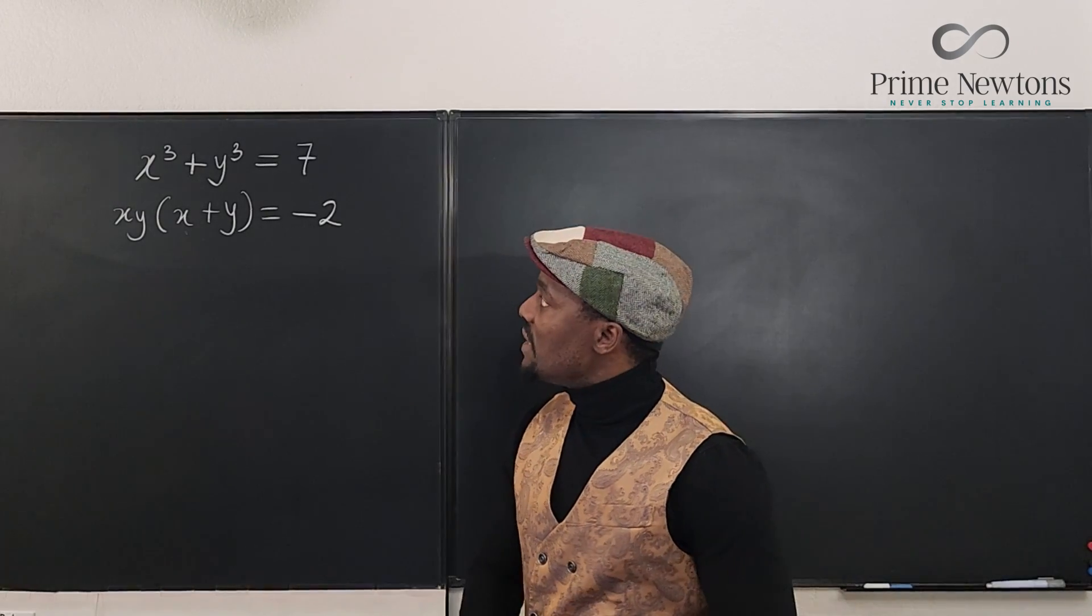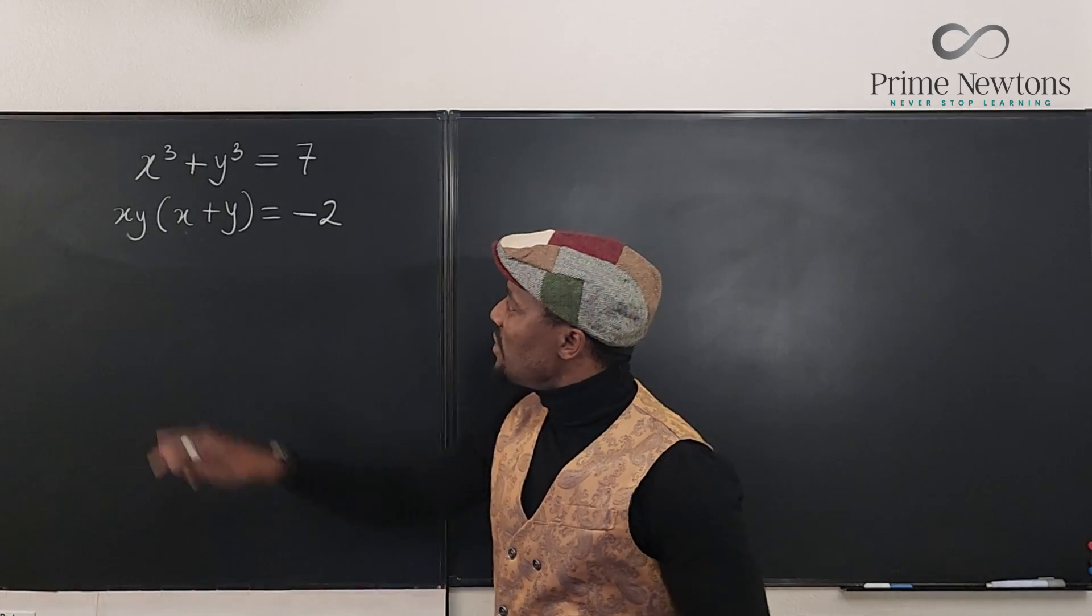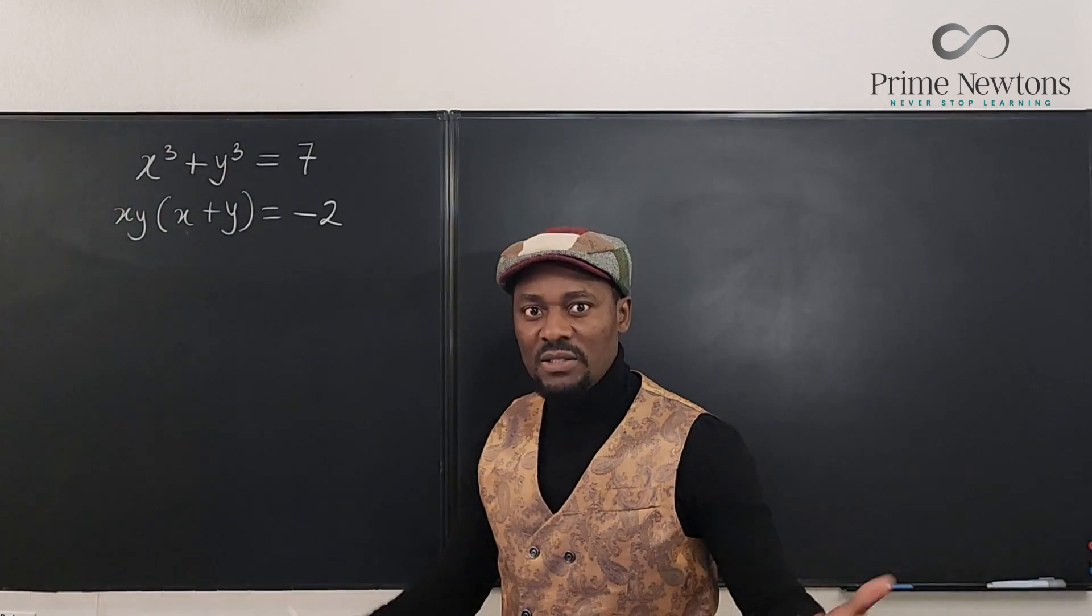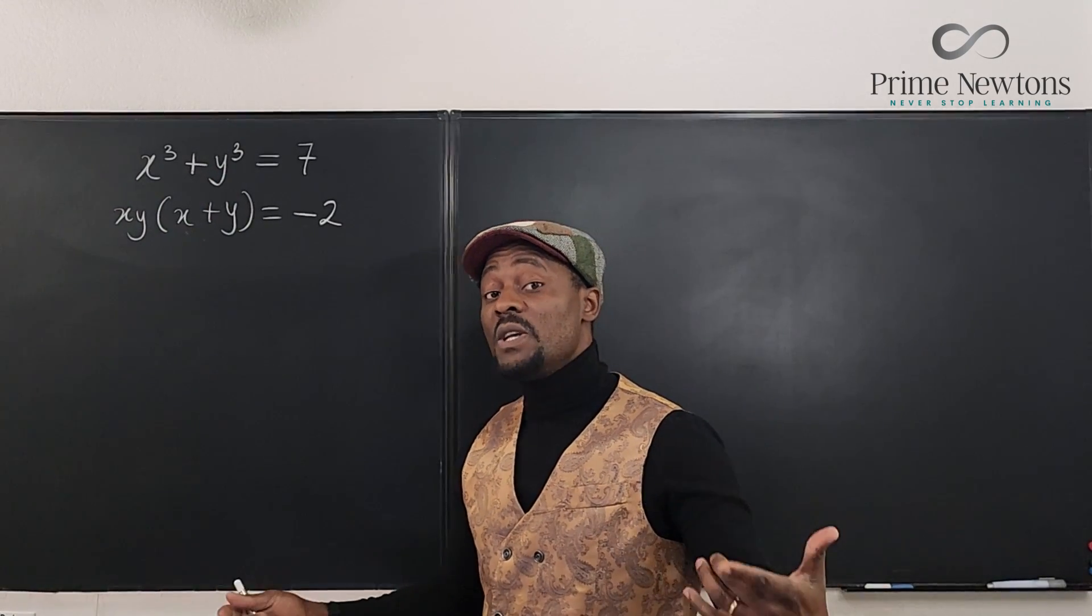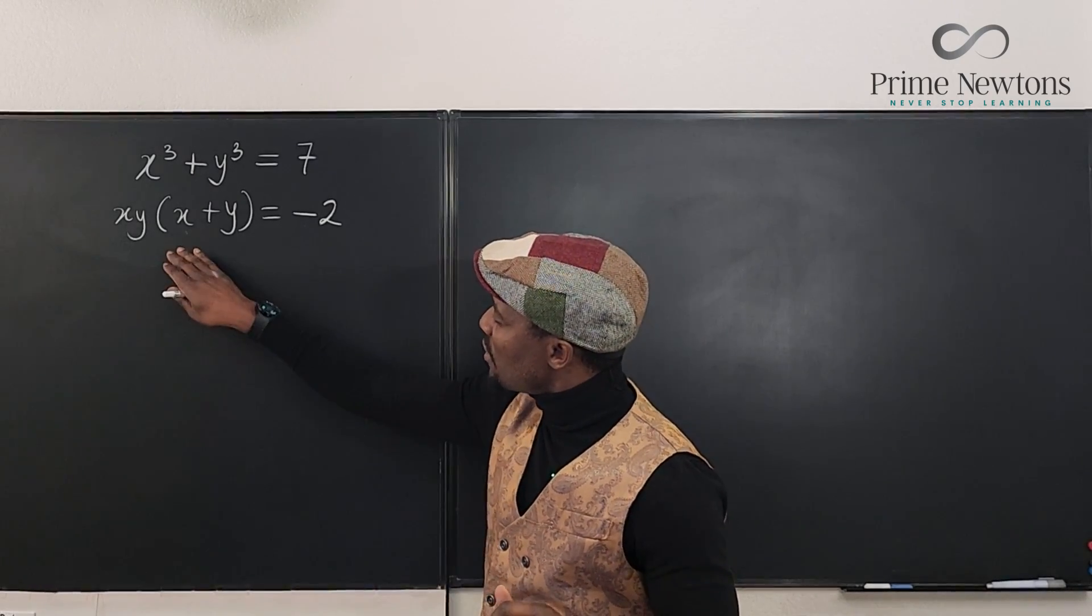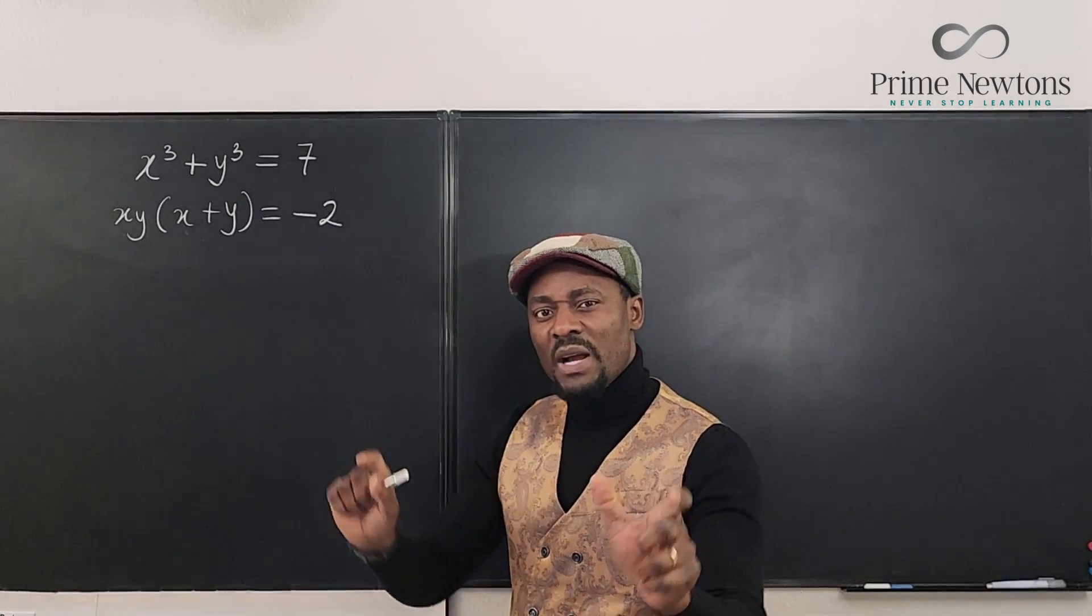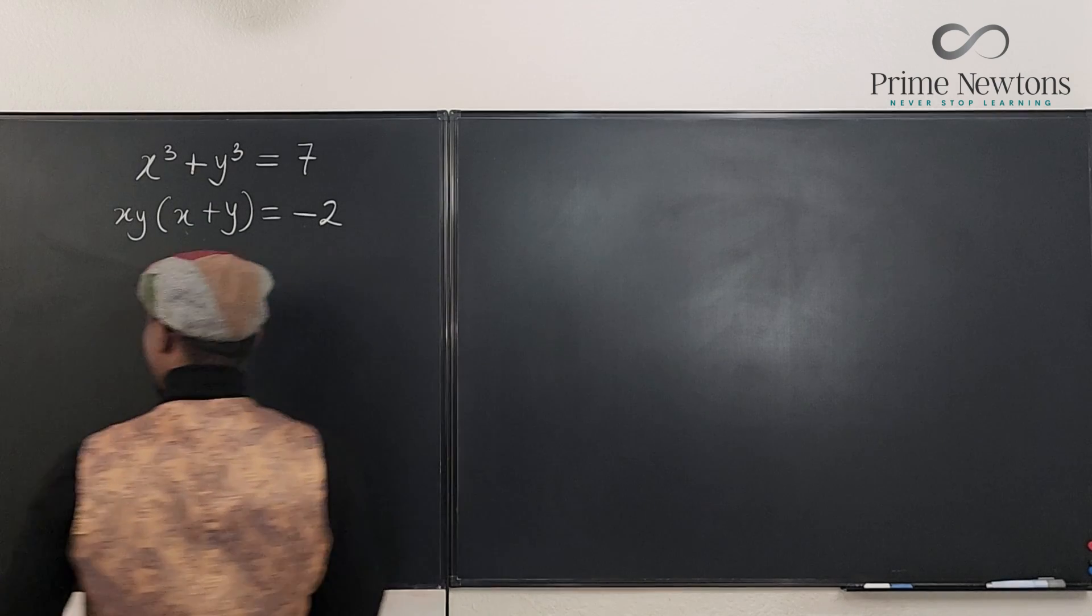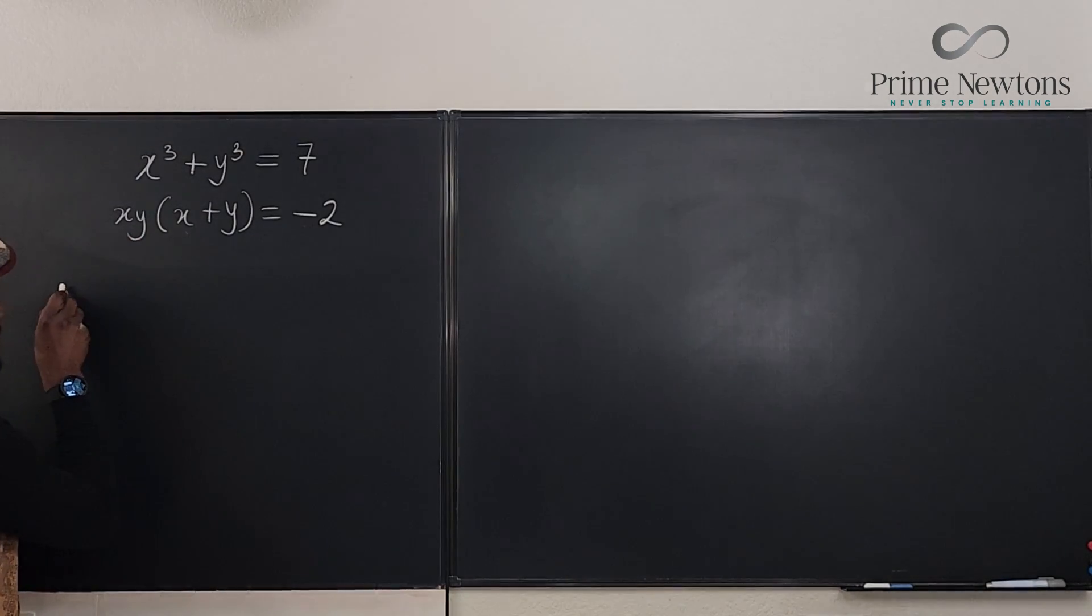The first thing we're going to do is try to factor this expression. What is the sum of two cubes? Well we know the sum of two cubes has some special property which we don't see here. What about the cube of a binomial? So let's see. I think that's what I'm going to do.